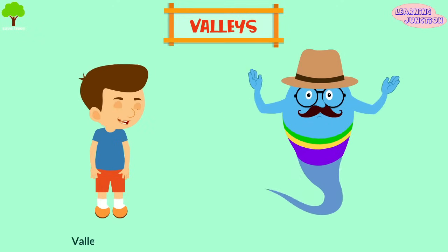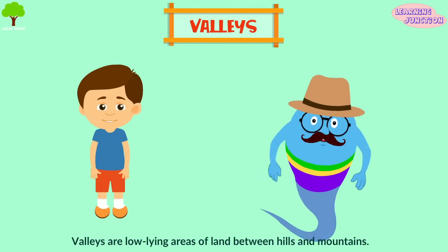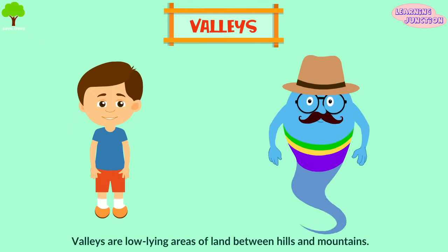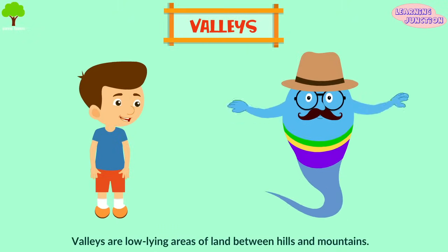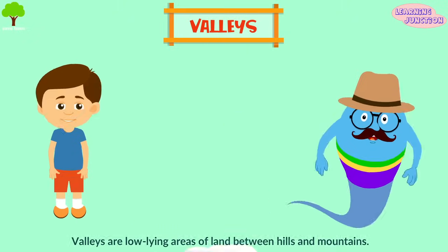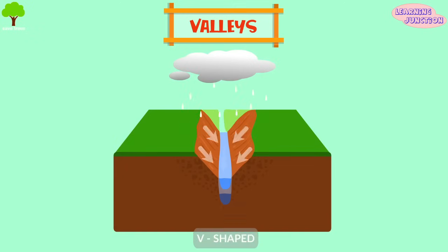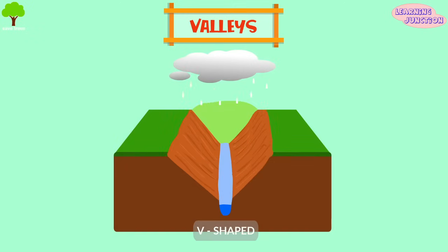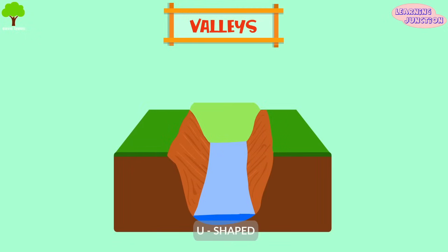Valleys. Valleys are low-lying areas of land between hills and mountains that are formed due to the actions of rivers and glaciers over millions of years. They're classified as V-shaped valleys, formed by flowing rivers, and U-shaped valleys, formed due to glaciers.